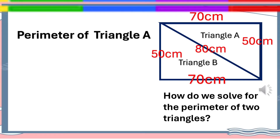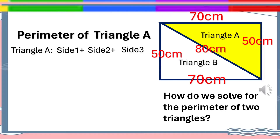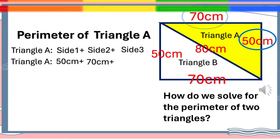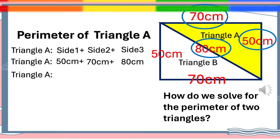To solve for the perimeter of Triangle A, you will notice that Triangle A has no equal sides, so Triangle A equals side 1 plus side 2 plus side 3. Triangle A equals 50 cm plus 70 cm plus 80 cm. Adding these together gives 200 centimeters. Therefore, the perimeter of Triangle A is 200 centimeters.